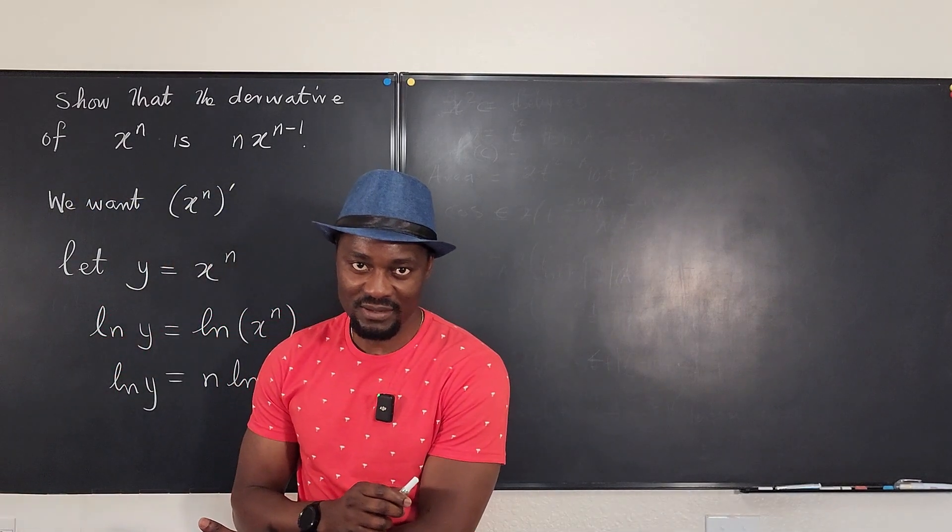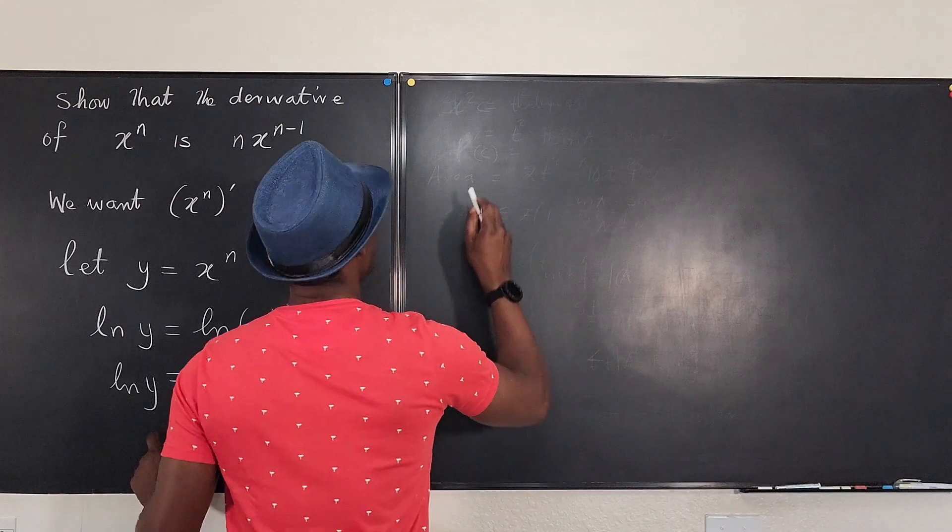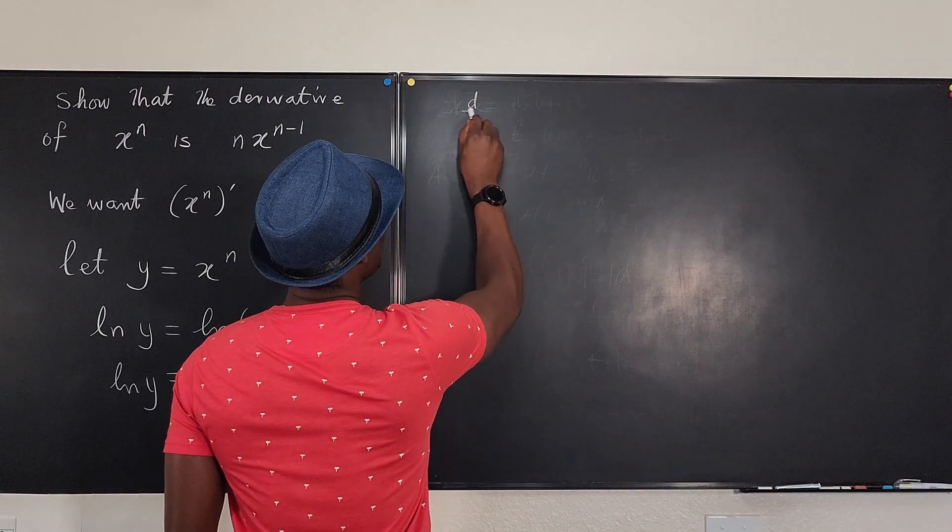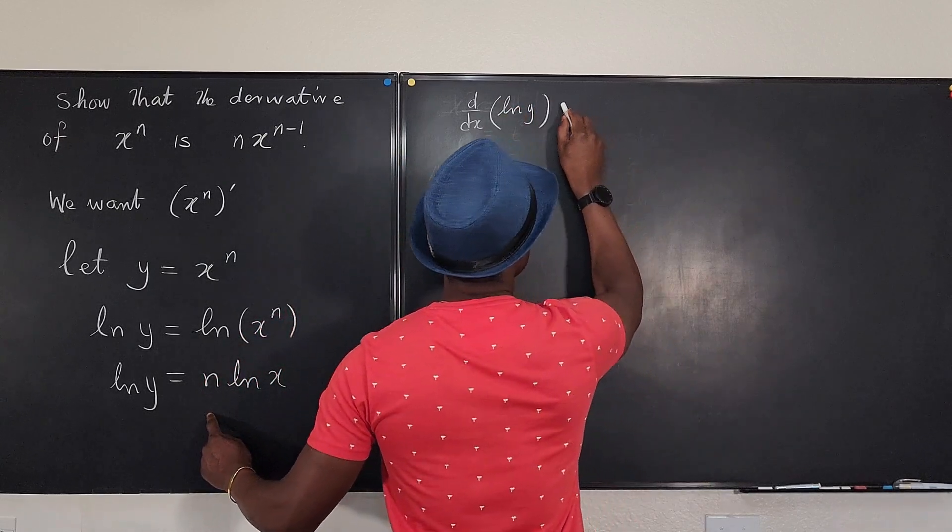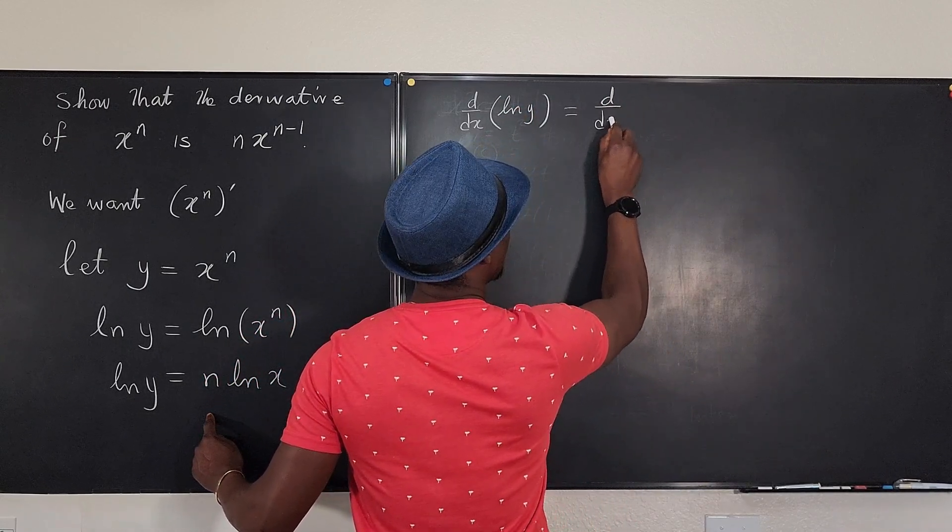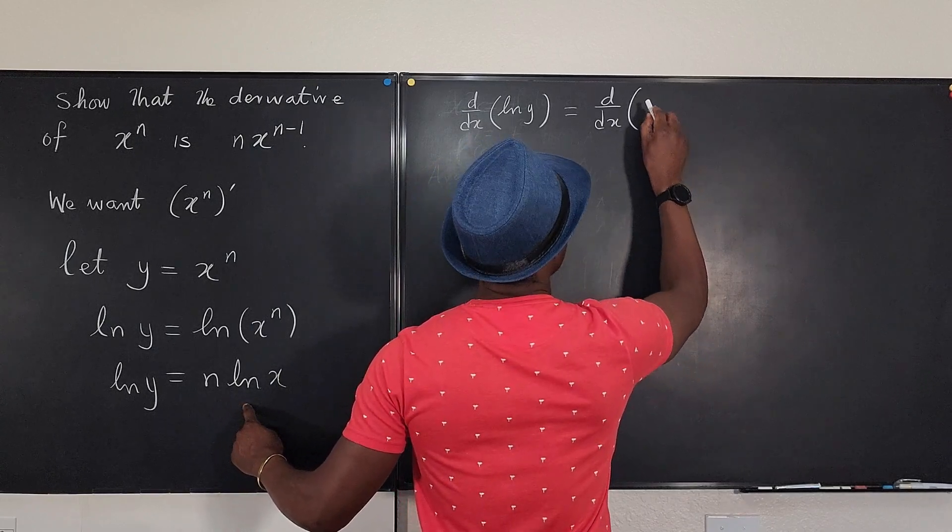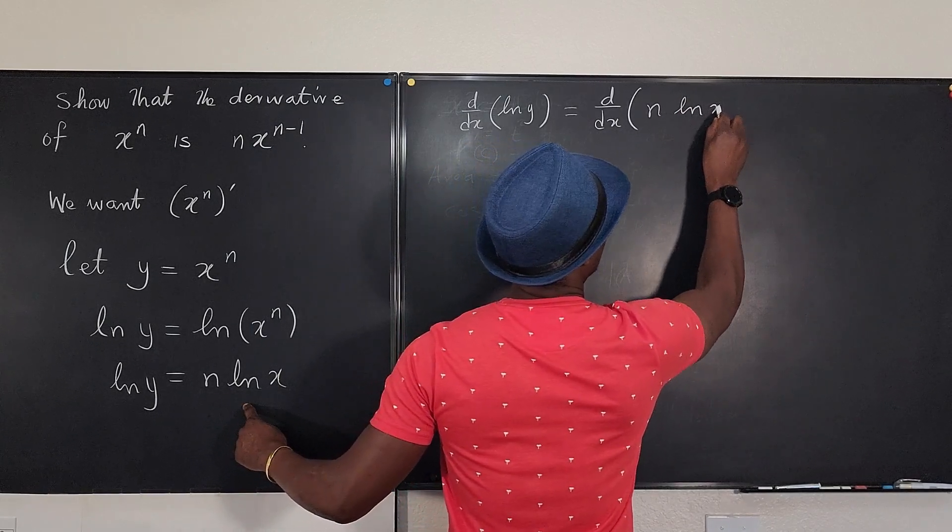And this is where we begin. So I'm going to say that if I take the derivative d/dx of ln(y), it will be equal to the derivative, also d/dx, of n·ln(x).